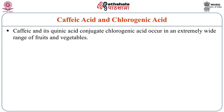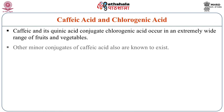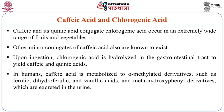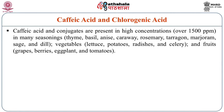Two major classes of tannins are proanthocyanidins, which are flavonoid polymers, and hydrolyzable tannins, which are polymers of gallic and ellagic acid esterified to either glucose or a polyphenol such as catechin. The next toxicant is caffeic acid or chlorogenic acid. This occurs in an extremely wide range of fruits and vegetables. Upon ingestion, chlorogenic acid is hydrolyzed in the gastrointestinal tract to yield caffeic and quinic acid. In humans, caffeic acid is metabolized to alpha-methylated derivatives such as ferulic acid, dihydroferulic acid and vanillic acids, and meta-hydroxyphenyl derivatives, which are excreted in the urine.